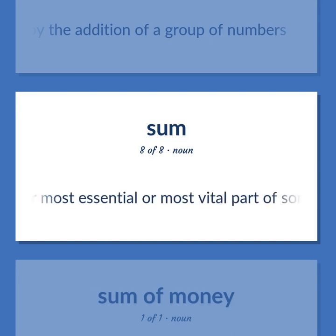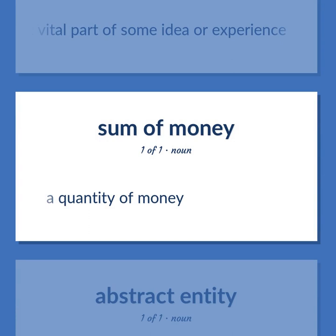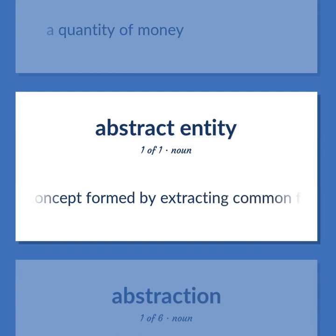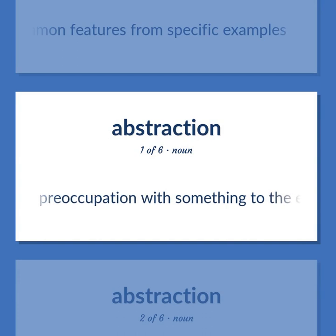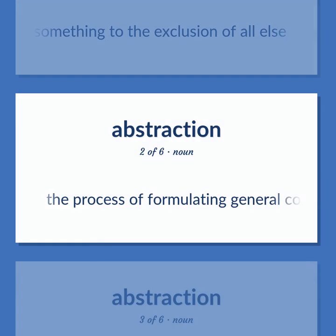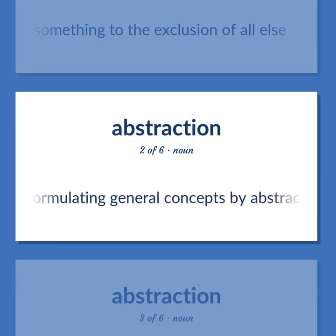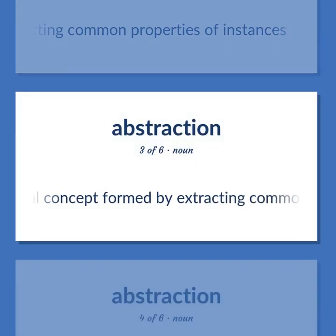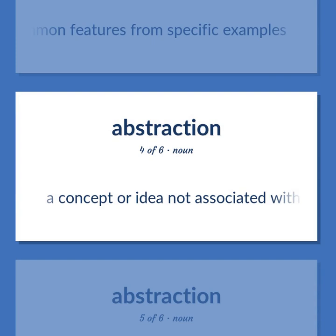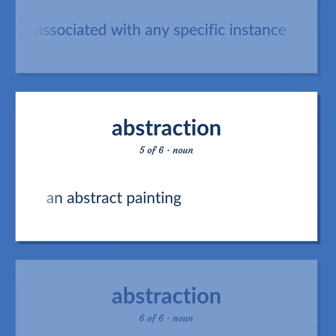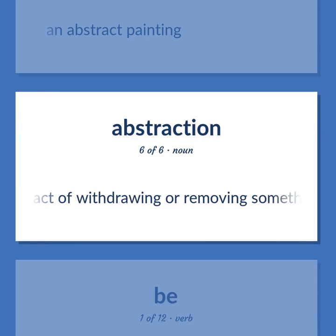The choicest or most essential or most vital part of some idea or experience. A quantity of money. Abstract: A general concept formed by extracting common features from specific examples. Preoccupation with something to the exclusion of all else. The process of formulating general concepts by abstracting common properties of instances. A general concept formed by extracting common features from specific examples. A concept or idea not associated with any specific instance — an abstract painting. The act of withdrawing or removing something.